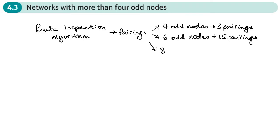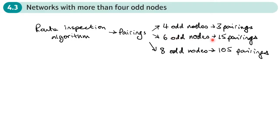How about if there were eight odd nodes? How many pairings would there be? There would be 105 pairings. When we do these questions, we don't want to be listing all of those pairings. So beyond four odd nodes, it really becomes impractical - like six or eight odd nodes - to list all of the pairings. So when we have these types of questions where there are more than four nodes, there'll be some piece of information in the question that's going to restrict the number of pairings.